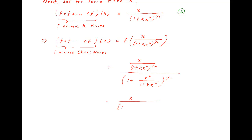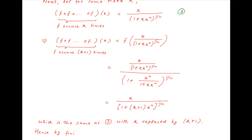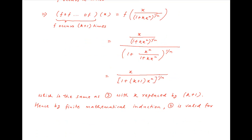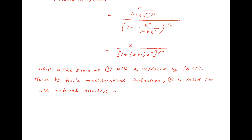This simplifies to x upon 1 plus k plus 1 times x raised to the power n, whole raised to the power 1 upon n. Notice that the right-hand side is the same as the right-hand side of Result 3, except that k has been replaced with k plus 1. Hence, by mathematical induction, it follows that formula 2 is valid for all natural numbers m.